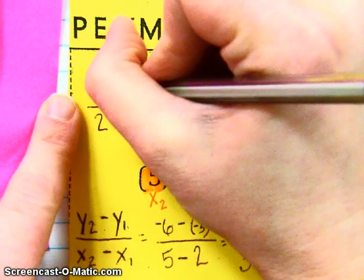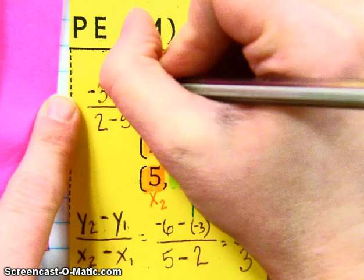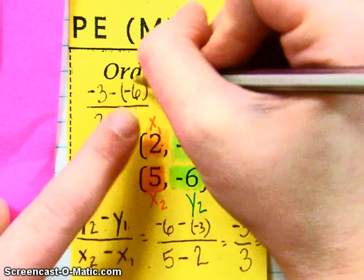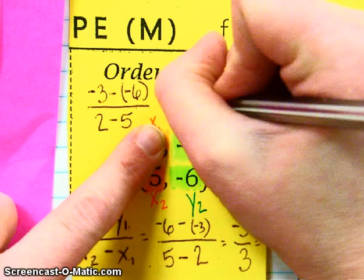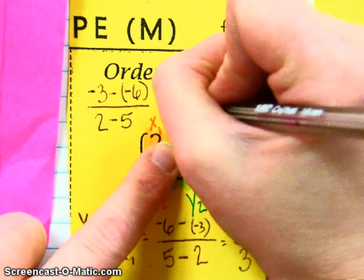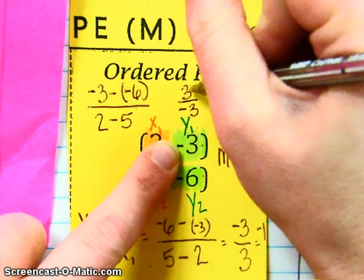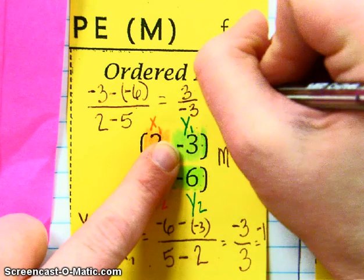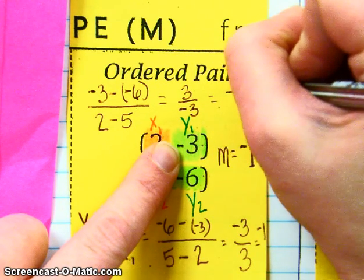And then I would have to do 2 minus 5. So negative 3 minus negative 6, kiss your frog, it will be negative 3 plus positive 6. That will be positive 3. And then 2 minus 5, that's negative 3. 3 divided by negative 3 is still negative 1.